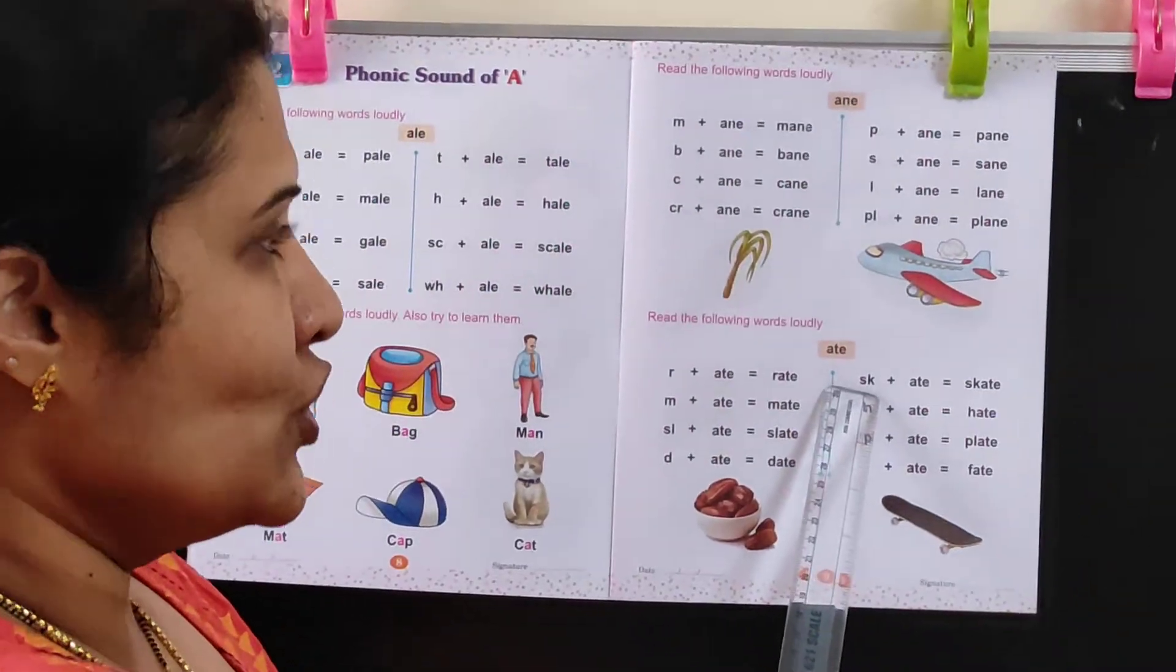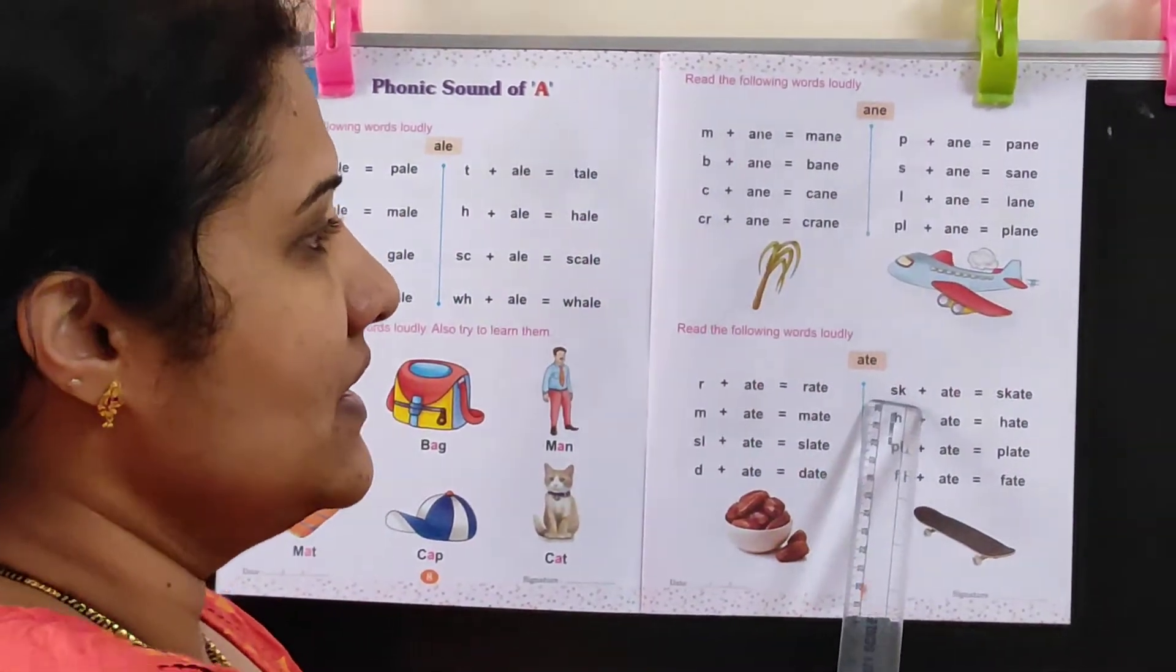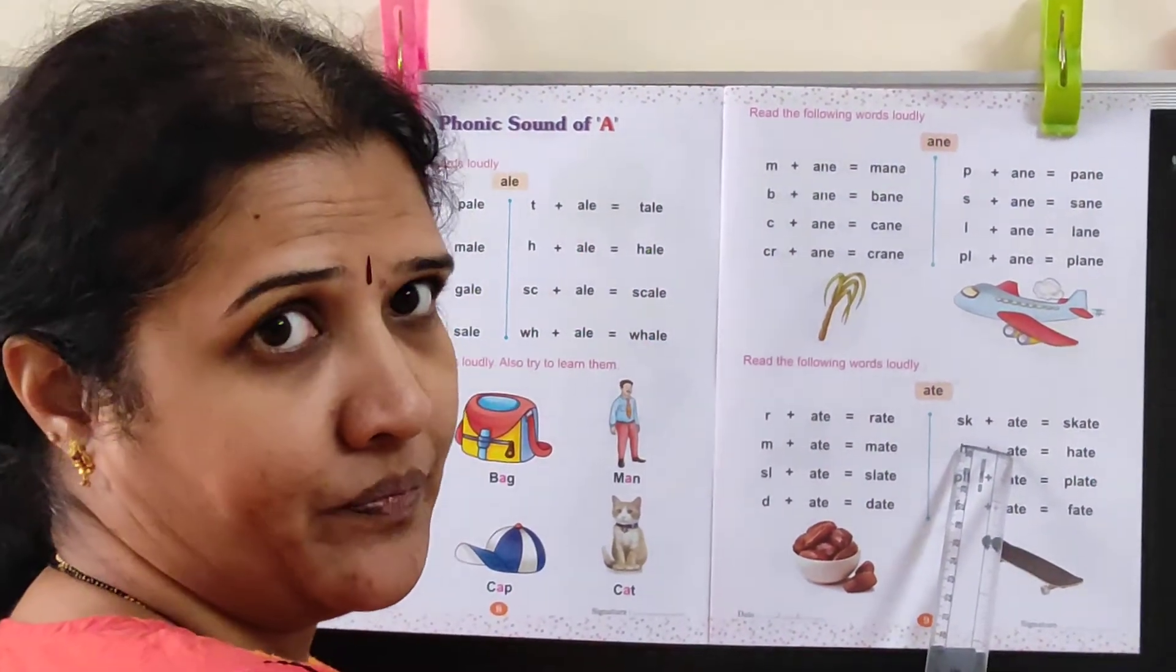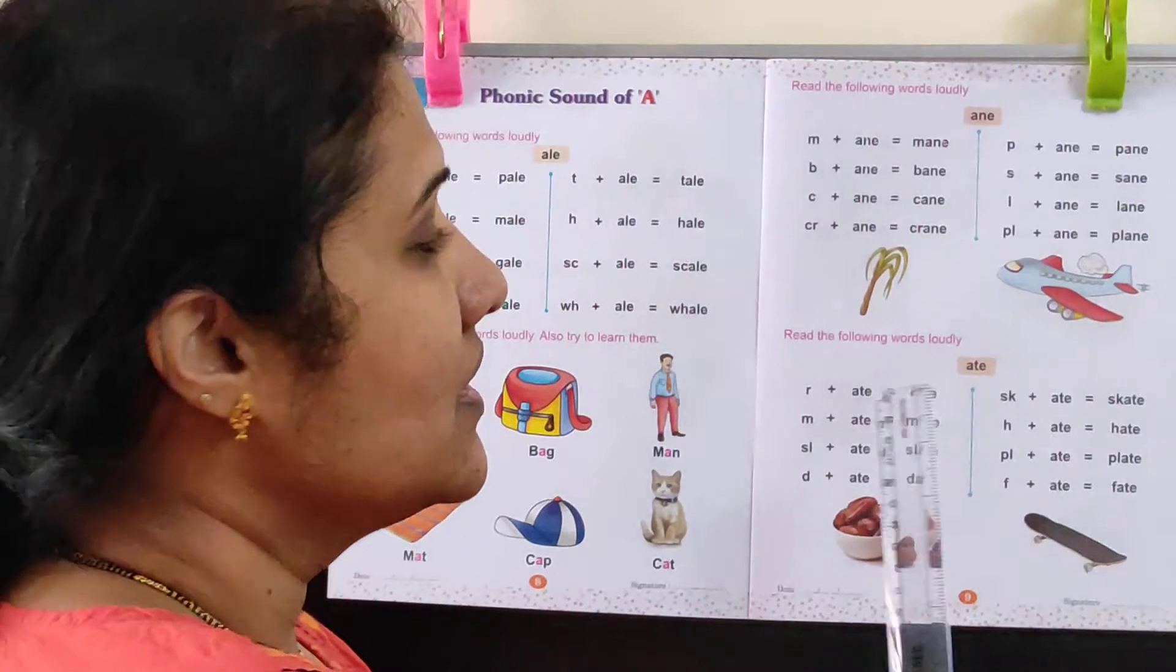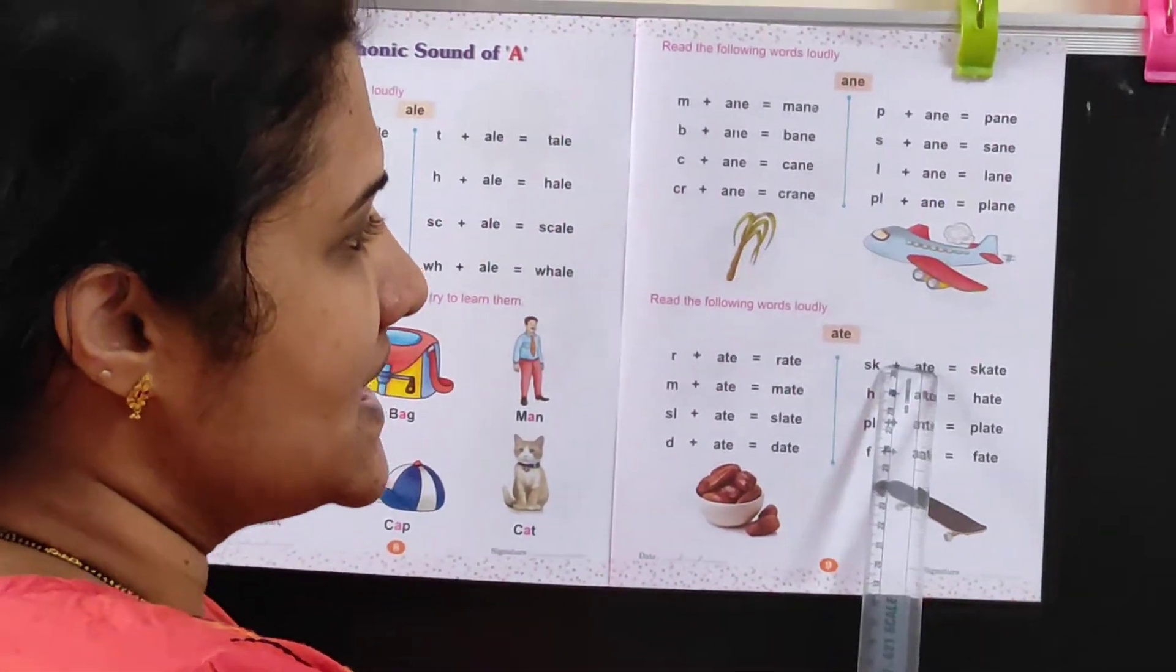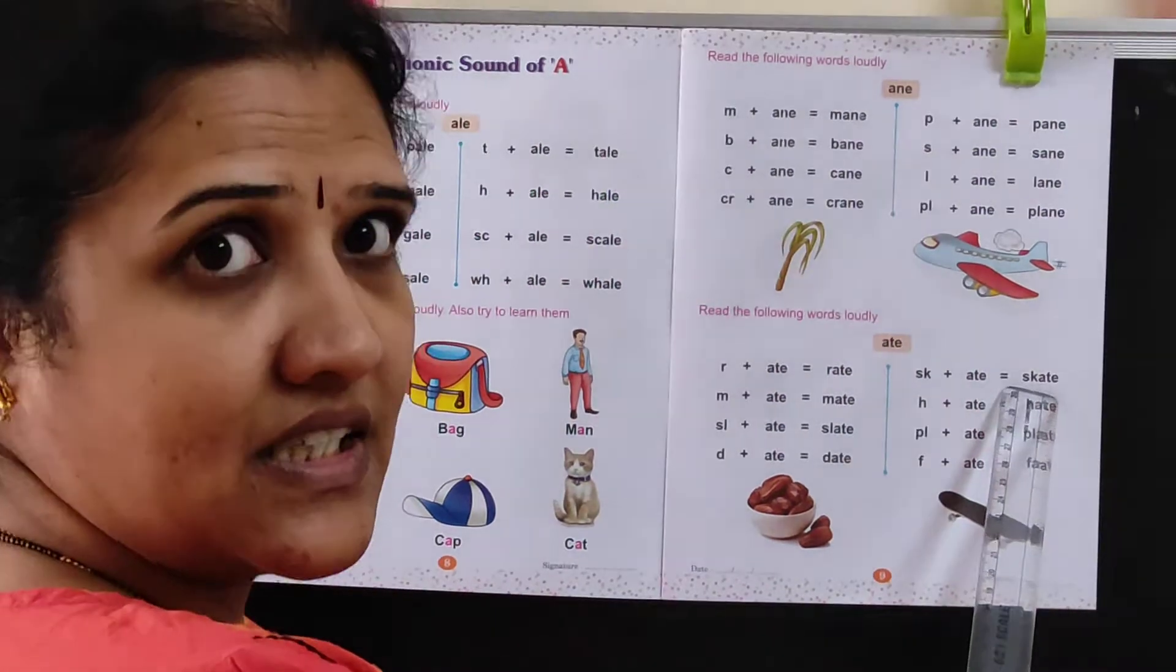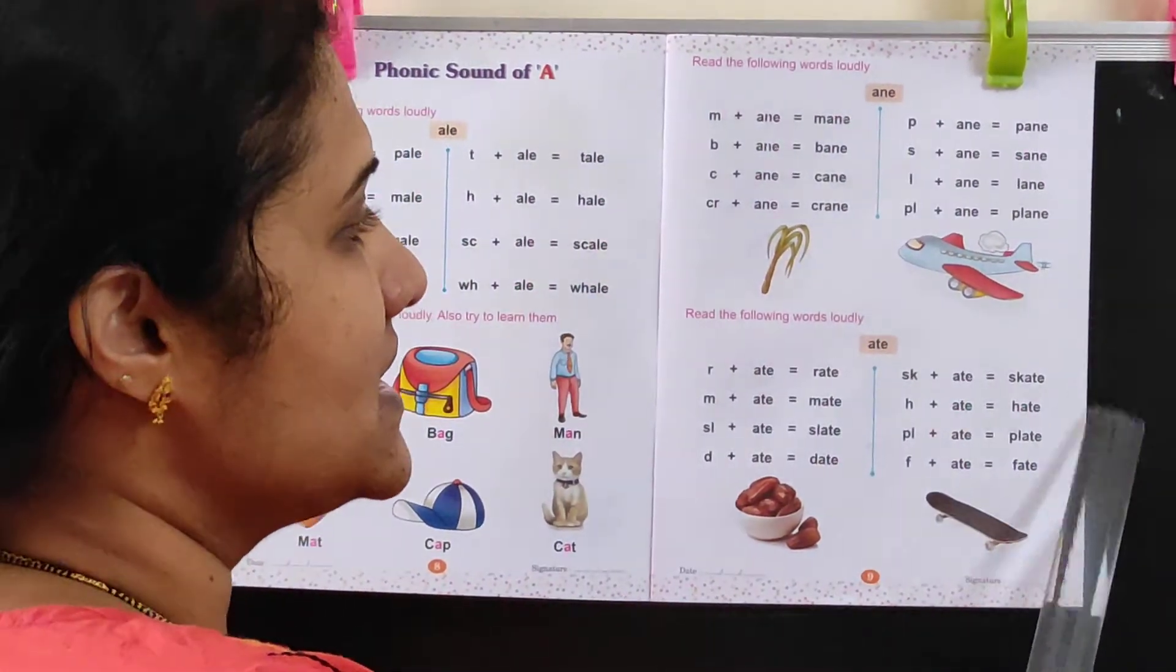Now again two letters, S and K. When S and K come together, the sound is Scur. Scur plus ate is Skate. S-K-A-T-E, Skate.